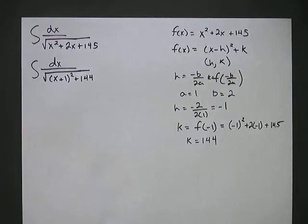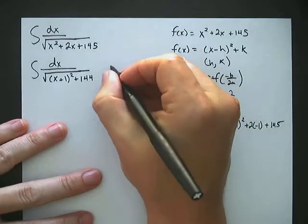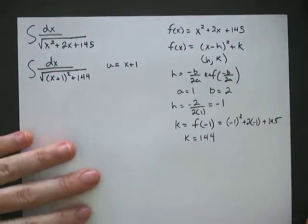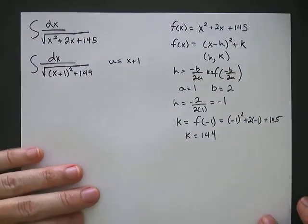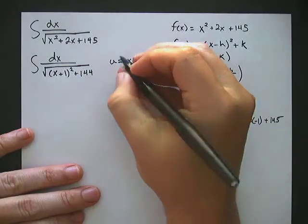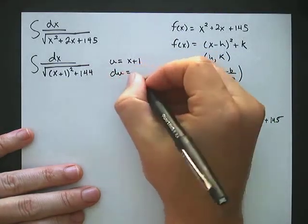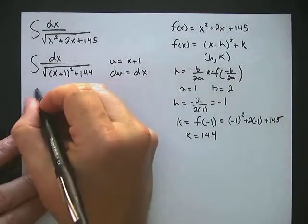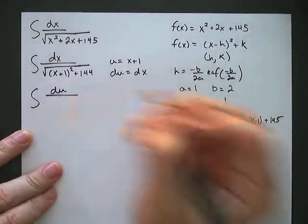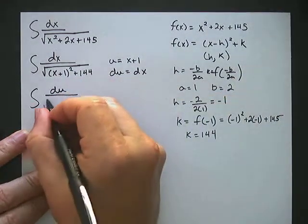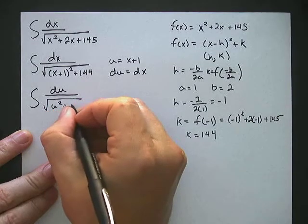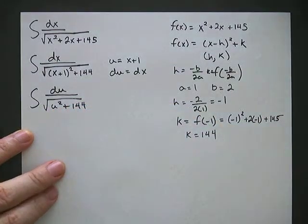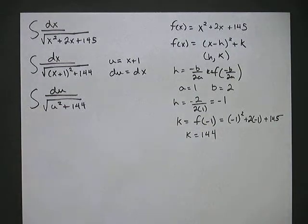The next thing we want to do is a quick u-substitution. We're going to say u is equal to x plus 1, because we're eventually going to do a trig substitution. If u equals x plus 1, then du equals dx. So we substitute to get du over the square root of u squared plus 144. Note that 144 is 12 squared.